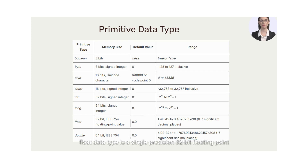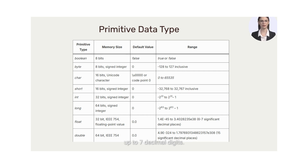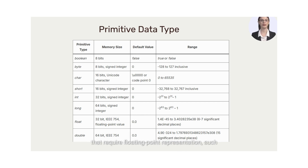The float data type is a single-precision 32-bit floating-point number in Java. It can store fractional numbers with precision up to seven decimal digits. Floats are used when dealing with real numbers that require floating-point representation, such as scientific calculations, engineering simulations, and graphics programming.